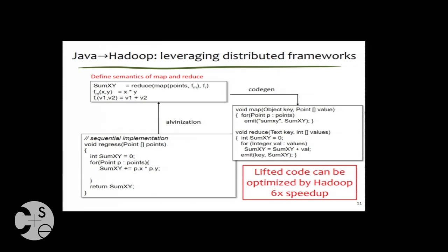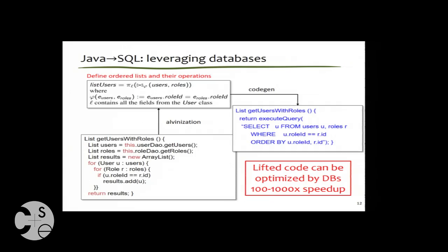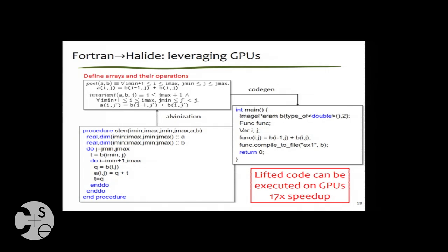So here is an example of a Java computation that is lifted to the small spec up there, which has a map function and a reduce function here, small in this case. And then you get the Hadoop on the right for about 6x speedup. Here you do the same thing for Java database operations, and then you generate SQL here. The speedup could be up to 1000x. And you could do the same thing from Fortran to Halide and run on GPU for about 17x speedup.